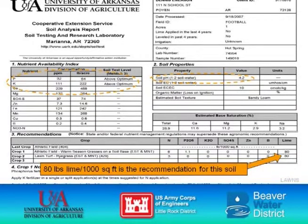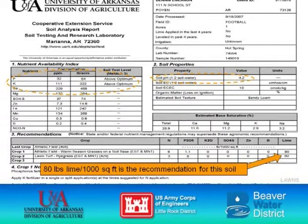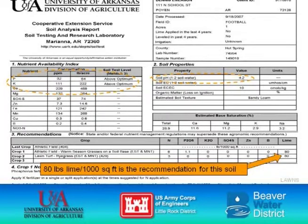Looking at this soil test, you can see a few areas circled. Under part one we have our nutrient status — we look for phosphorus (P) and potassium (K) levels. Here they say they're above optimum, which means we don't need to apply extra phosphorus or potassium. Under soil properties we look at soil pH, because that affects the availability of plant nutrients. Part three gives practical recommendations on how to fertilize your lawn based on your results.